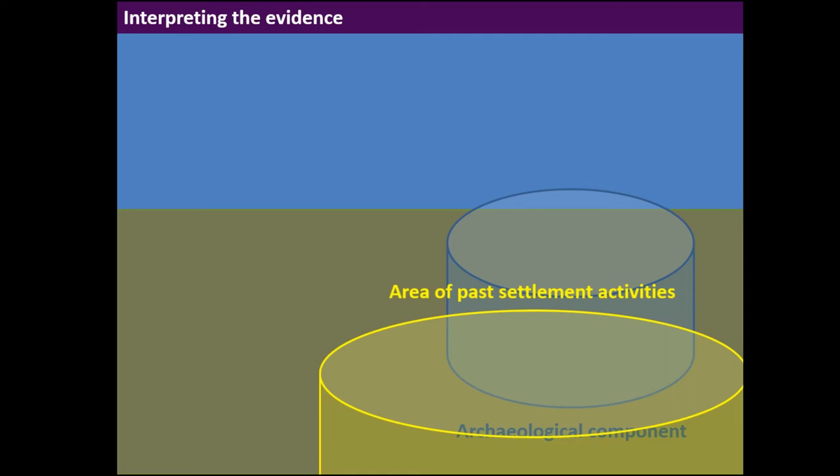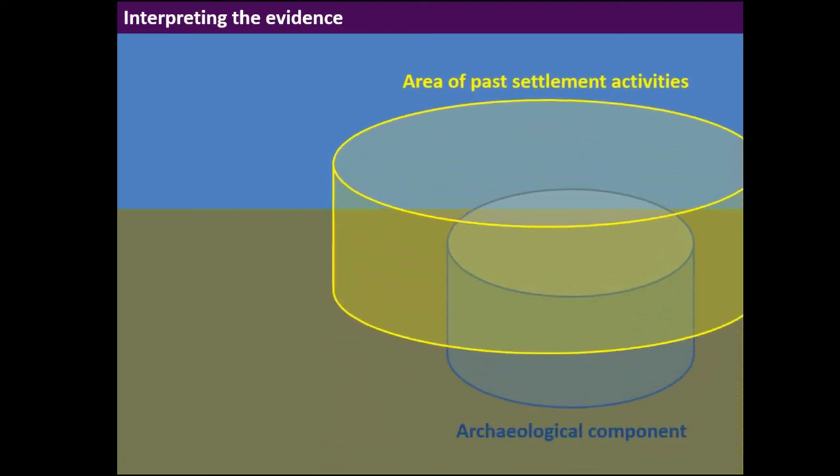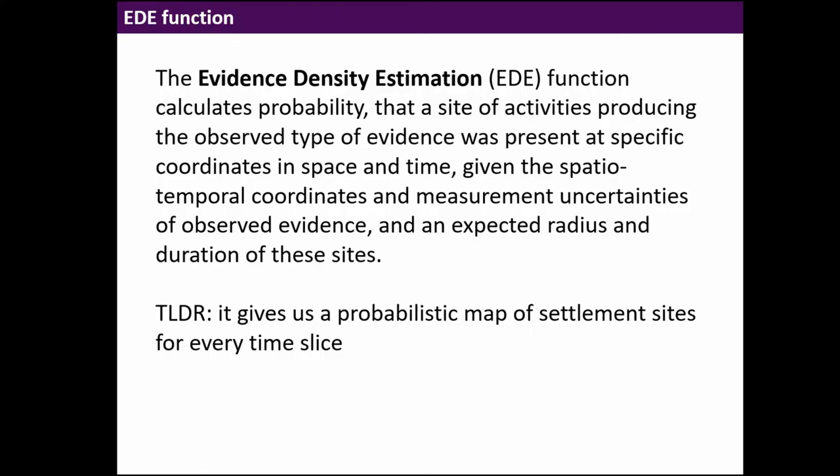We don't know where the center lies, so the image might look like this or like this. There has to be some overlap, but it's two volumes in space and time that are somehow related. The way to statistically assess this is to integrate over space and time. The evidence estimation function calculates the probability that the site of activities producing the observed type of evidence was present at specific coordinates in space and time, given the spatial temporal coordinates and measurement uncertainties of observed evidence and an expected radius and duration of these sites. In simple words, it gives us a probabilistic map of settlement sites.